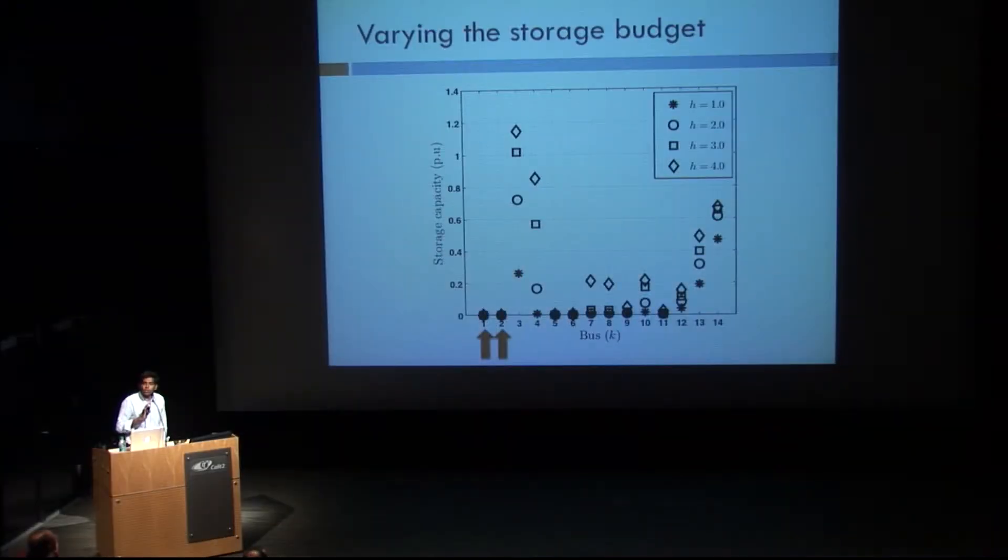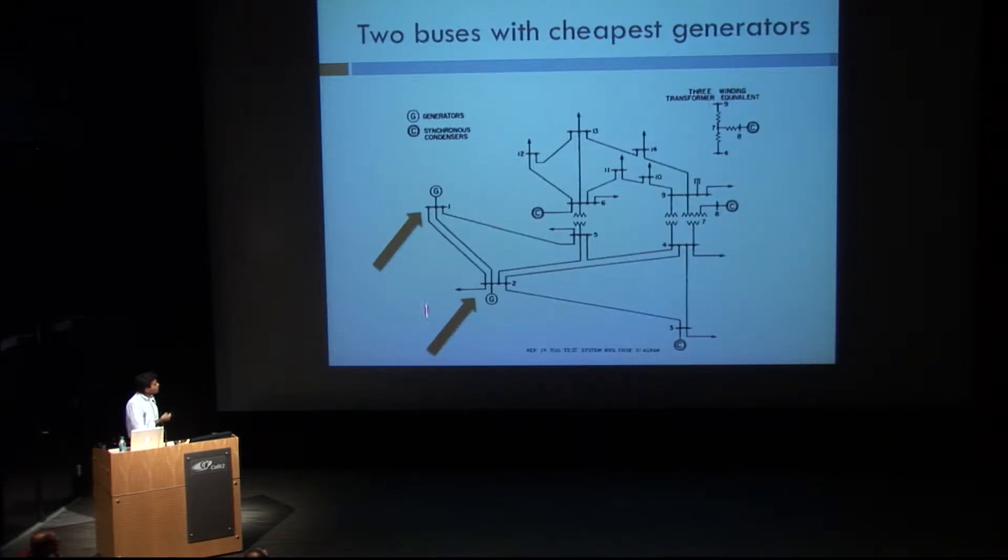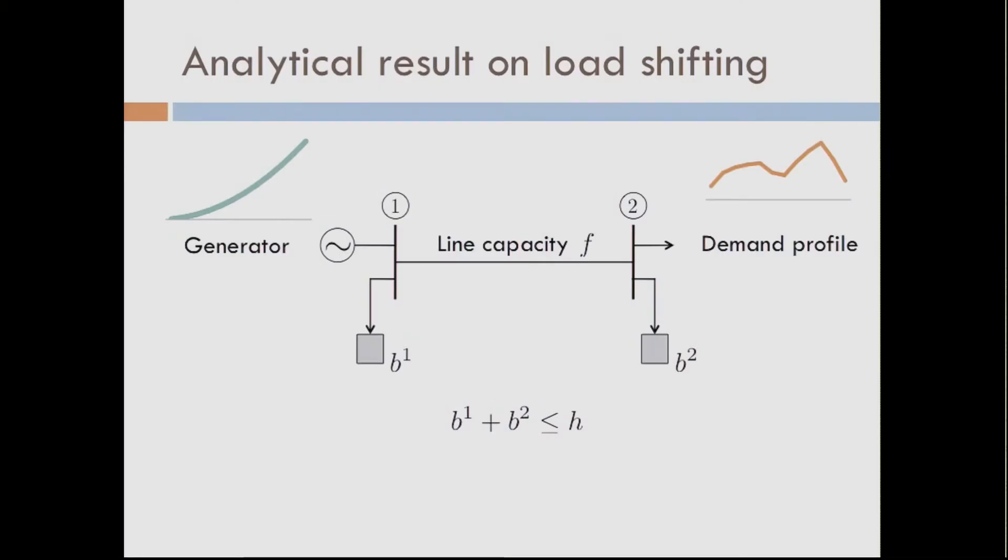Surprisingly, whenever we ran, this is one of the results. The x-axis is the bus number, and this is how much storage you put at each individual bus. Without even going through something, we noticed that buses 1 and 2 always get zero storage capacity. And what are buses 1 and 2? The two cheapest generators. So we were a little surprised, because you don't usually think that you would have no storage at the generation. So we tried to prove this using this framework. It turns out, with the AC relaxation, which is essentially using a semi-definite program, it's quite hard to analyze this problem. So we simplified it and went back to our two-node model.